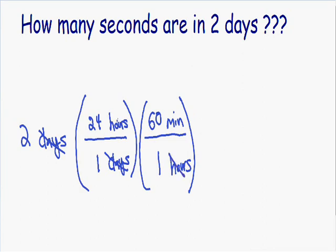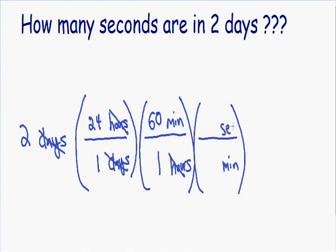Now notice how our hours cancel out and we are left with minutes as our units. But we're not finished because this question is asking us to convert into seconds, so we need to make another conversion tool. In our denominator we put what we're starting with — since we're starting with minutes, we put minutes in our denominator. In our numerator we put what we're ending with — since we're converting into seconds, we put seconds in our numerator. Our numerator and denominator have to be exactly equal: there are 60 seconds in one minute. Now notice how our minutes cancel out and we are left with units of seconds.